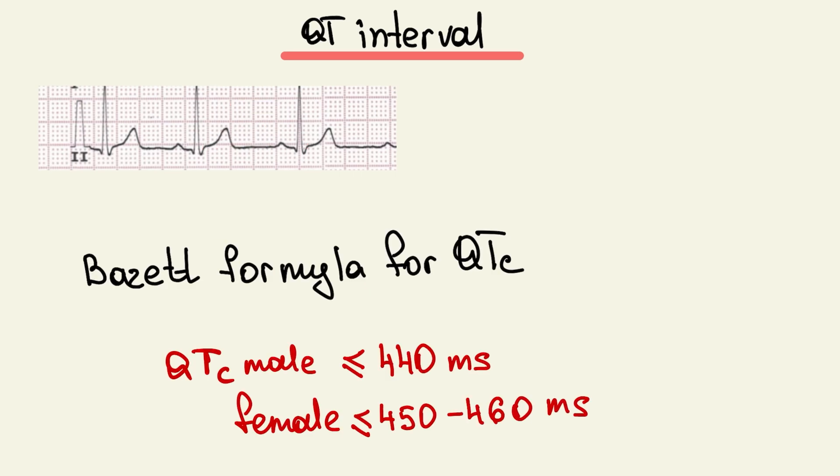QT interval. It's time from the start of Q wave to the end of T wave. Usually, we calculate the QT interval at lead 2 or V5. QT interval depends on heart rate. The QT interval shortens at faster heart rate and the QT interval lengthens at slower heart rate. And don't forget about the corrected QT interval.